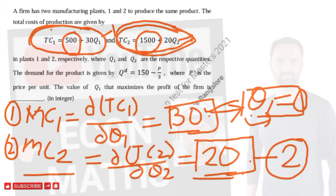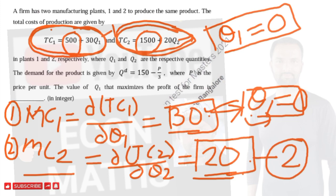The value of q1 that maximizes profit of the firm is equal to zero — we don't need to produce anything in plant one. All the production will take place in plant two. That will give us the maximum profit for the firm; the firm will obviously choose plant two to maximize its profit.